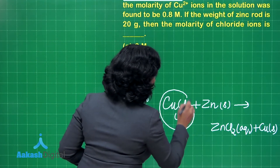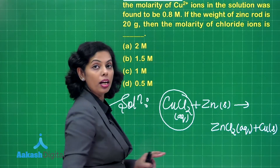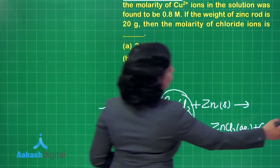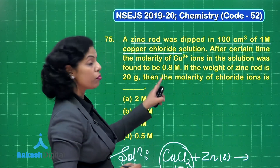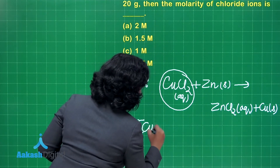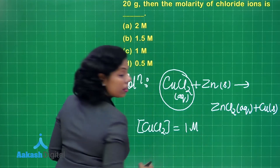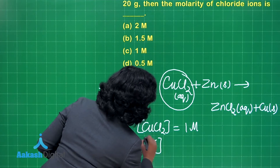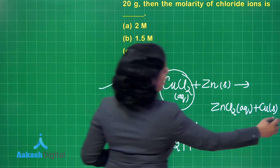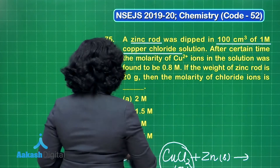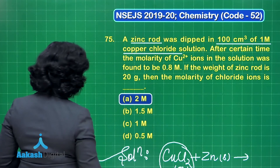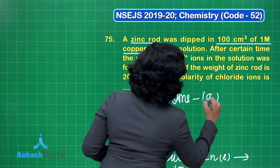The only source of chloride ions is CuCl2. One molecule of CuCl2 consists of 2 chloride ions. Since the concentration of copper chloride is 1 M, the chloride ion concentration is 2 M — double the concentration of CuCl2. The correct answer is option A.